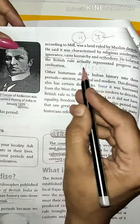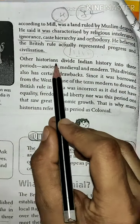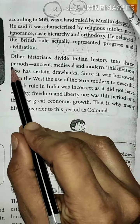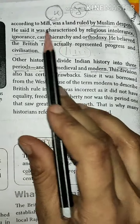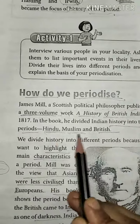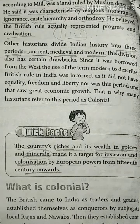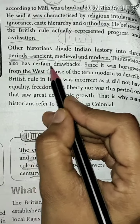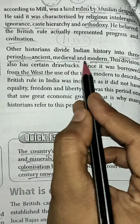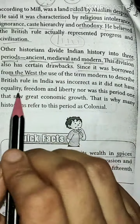Other historians — Indian historians — divided Indian history also into three parts: ancient, medieval, and modern. This is compared to James Mill's division of Hindu, Muslim, and British. This division had some drawbacks — because this division was basically taken from Western/European countries, and on that basis India's history was divided into ancient, medieval and modern period. But some Indian historians believed that the characterization of the modern history as 'British rule in India' was incorrect.